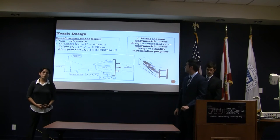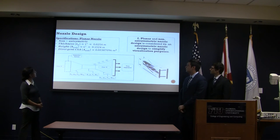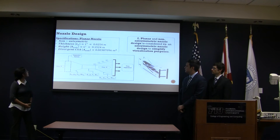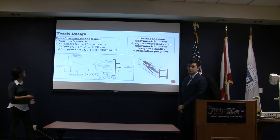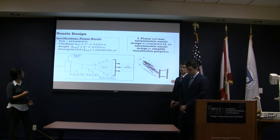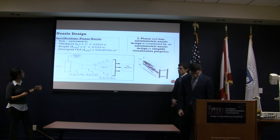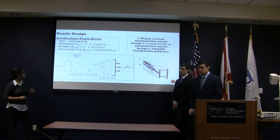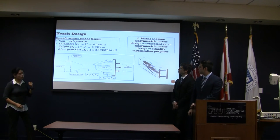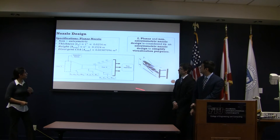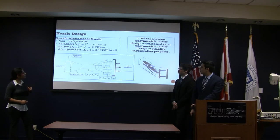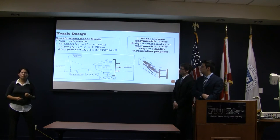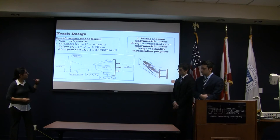For planar nozzle design, it's going to be non-axi-symmetric. We have to take different measurements for the thickness, height, and the divergence section. We plan to discretize the flow separation at different sections — numbered here from one to four — and this planar nozzle is going to help us better visualize and control when we use the electrodes.